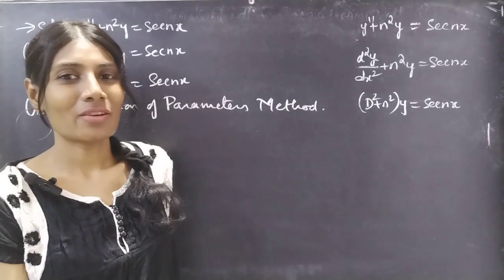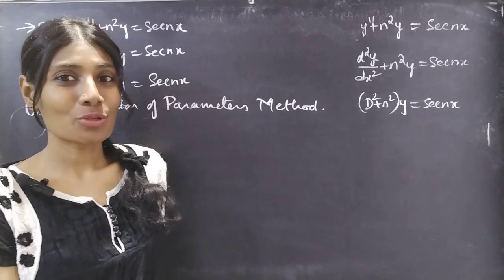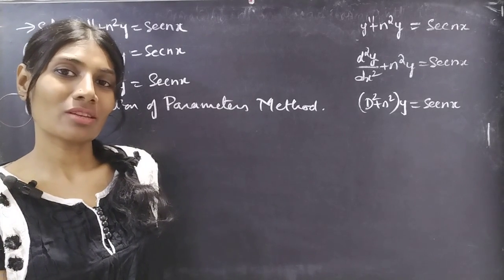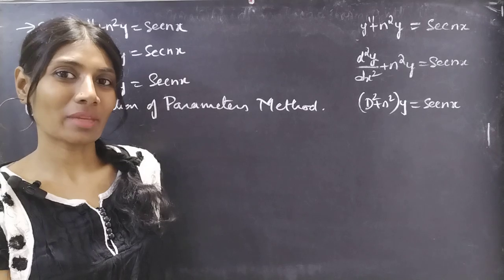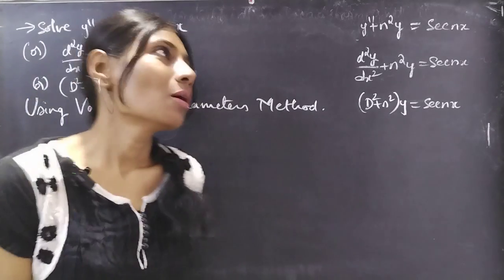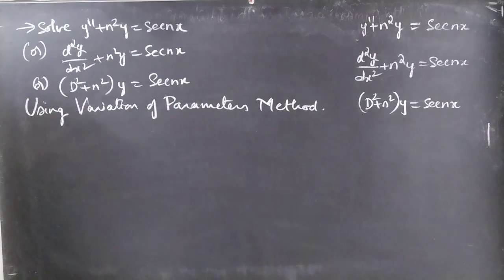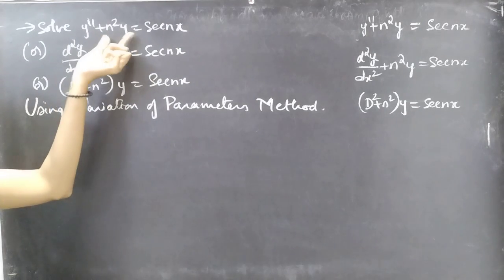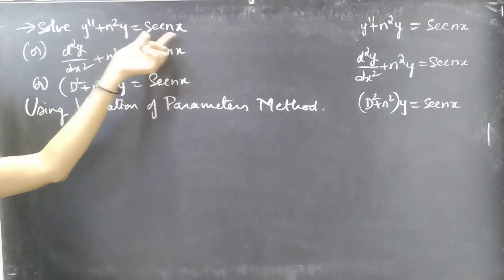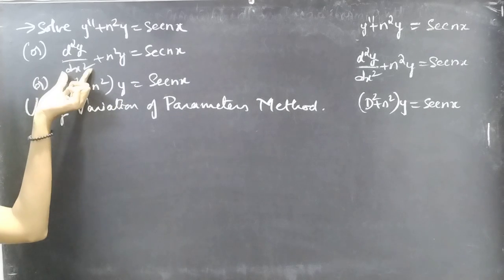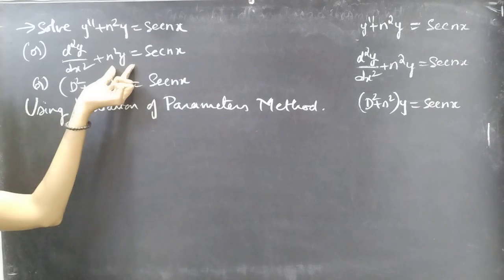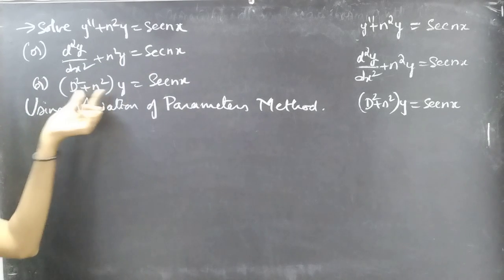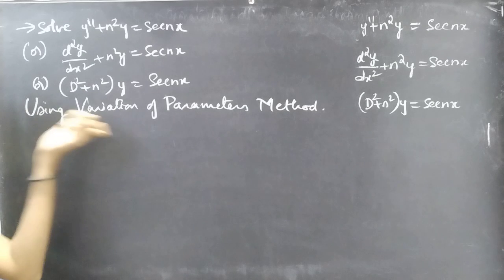Hello everyone, this is Jay Kalpana here. In this video we're going to solve a differential equation using the variation of parameters method. The problem is: solve y'' + n²y = sec(nx), or equivalently d²y/dx² + n²y = sec(nx).